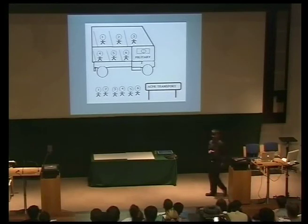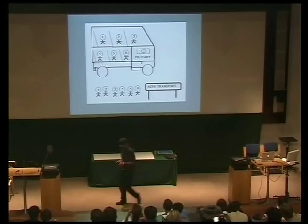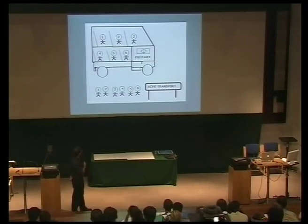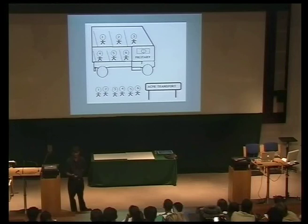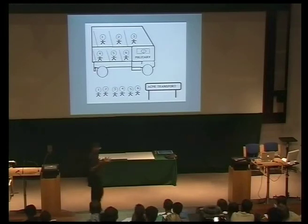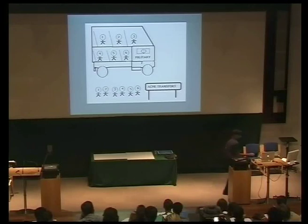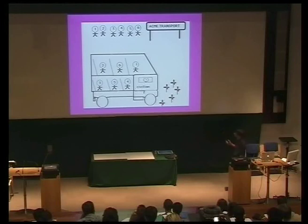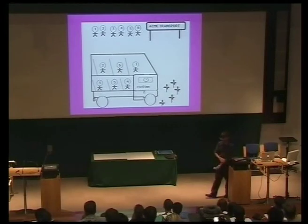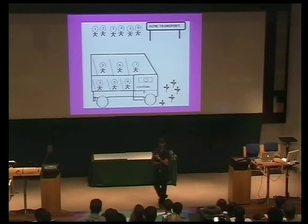Martensitic transformations involve a disciplined movement of atoms — imagine a queue of soldiers where the military transport arrives and they board the bus in a highly disciplined and coordinated manner, so there is a complete correspondence between positions of soldiers in the queue and on the bus. That is exactly the atomic correspondence in martensitic transformation. They may have to sit next to people they don't like — there is a lot of strain energy in a disciplined movement of atoms. Martensitic transformations are often called military transformations. By contrast, we have a queue of civilians — as soon as the bus arrives they all rush on board, sit next to their friends, we lose all atomic correspondence, and there is minimal strain energy. This is called a civilian transformation. Ferrite and pearlite are civilian transformations — they are close to equilibrium.